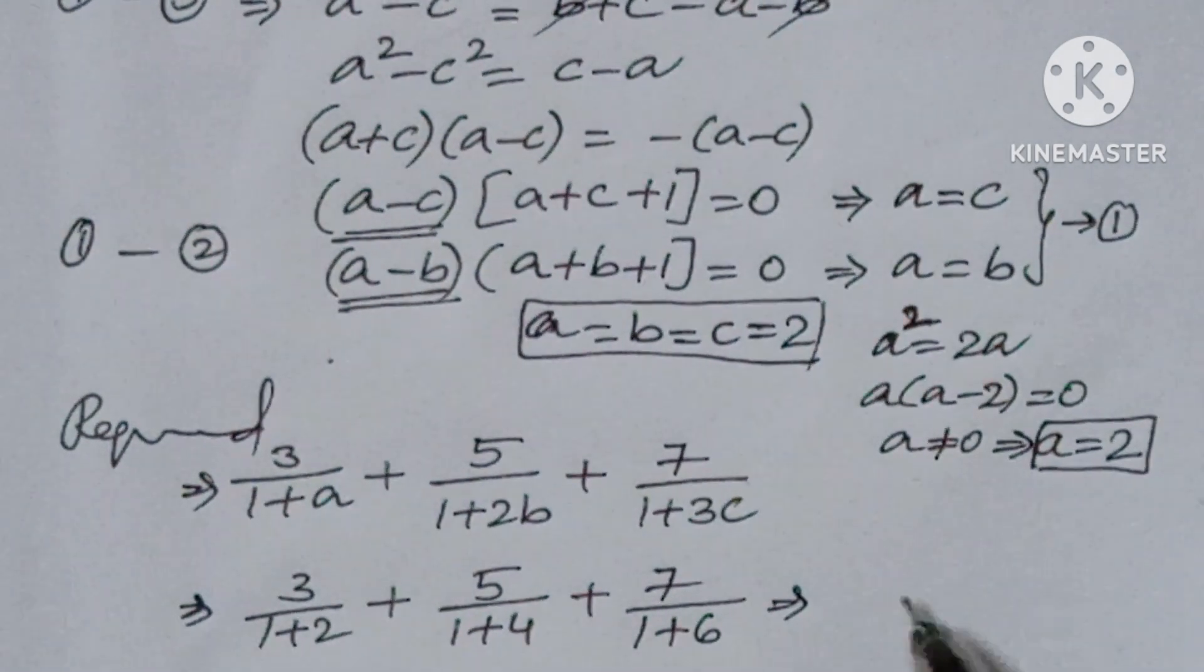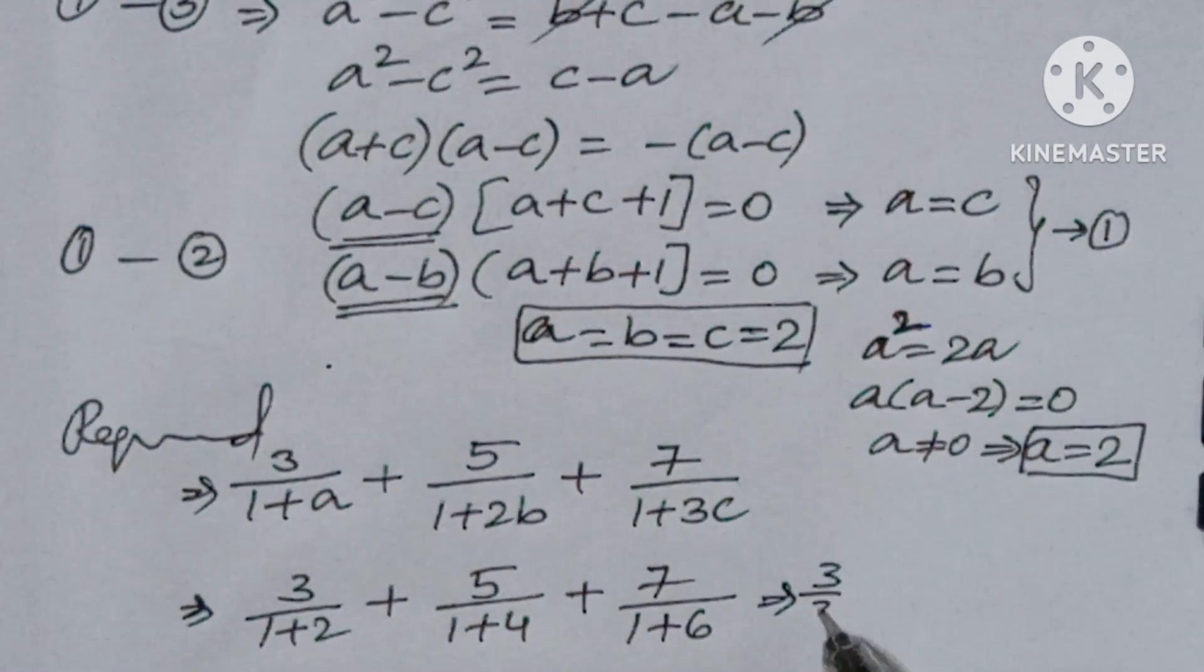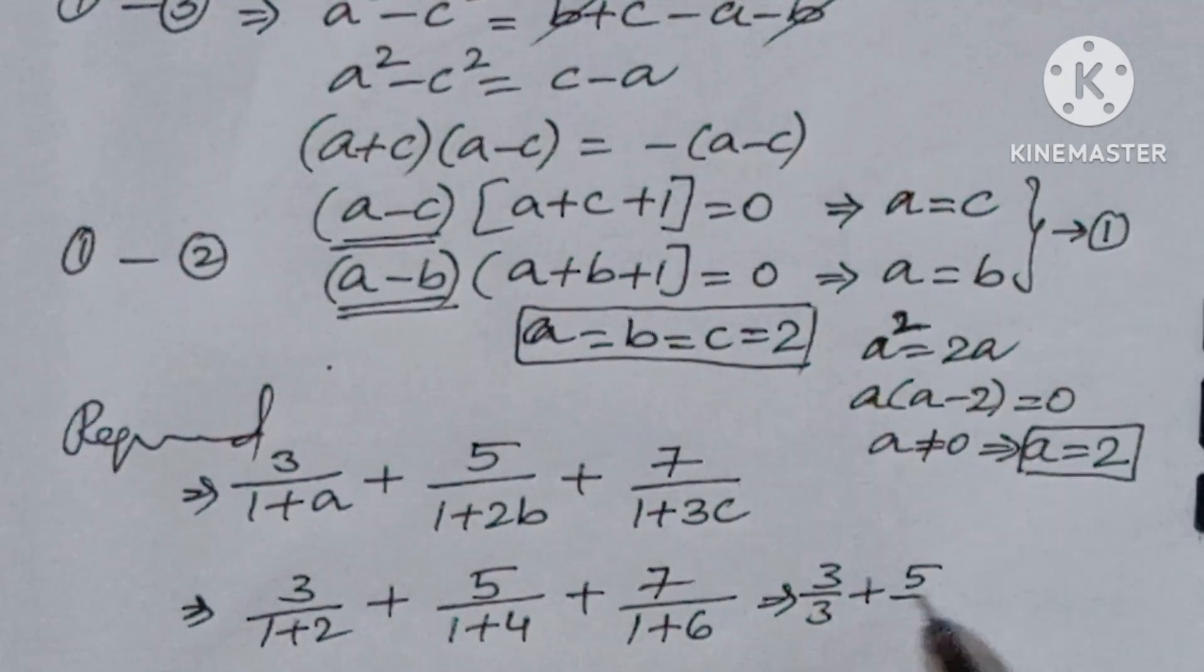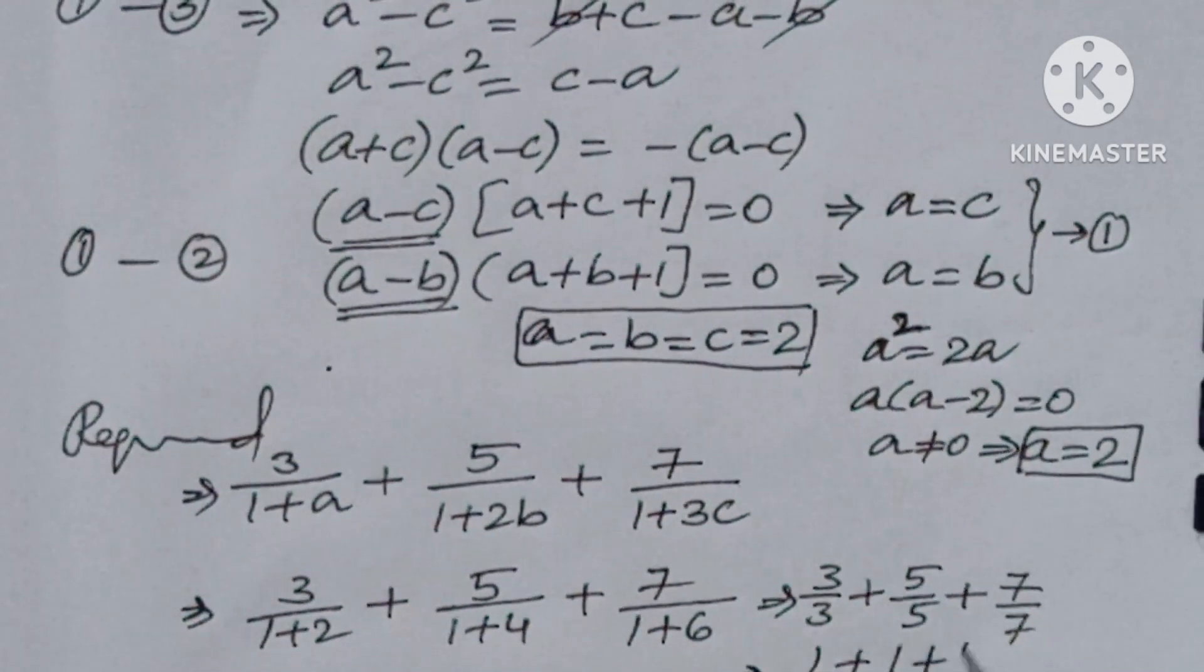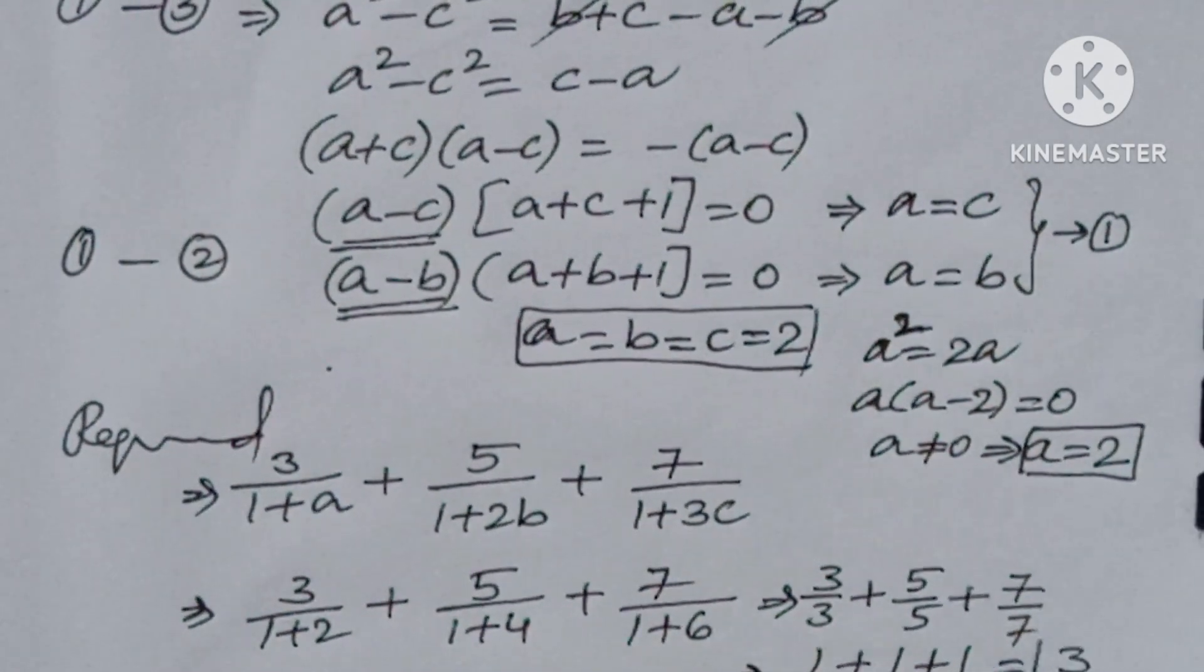You will get 3/3 + 5/5 + 7/7. Here you get 1 + 1 + 1, the answer is 3.